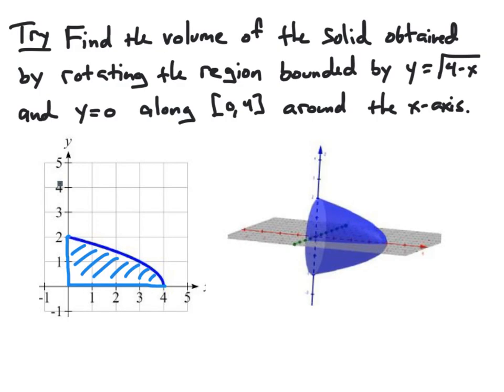If you'd like to try a similar problem, you can pause the video and find the volume of the solid obtained by rotating the region between y equals square root of 4 minus x and y equals 0 along the interval 0 to 4 around the x-axis. For your convenience, the region and the rotated solid are shown below. You can resume the video in a few seconds to see a worked-out solution.